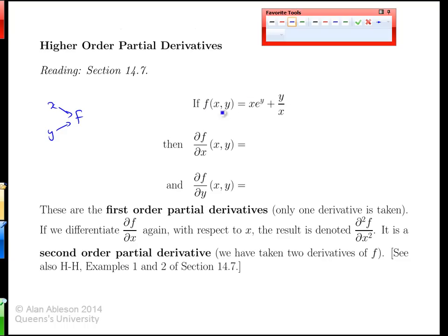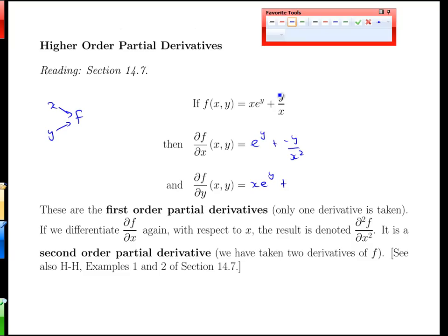Let's consider a simple example: f equals x·e^y plus y over x. We know how to take the partial derivatives of that function. The x partial derivative gives e^y minus y over x squared, and the y partial derivative of e^y is e^y, while the y derivative of y over x is 1 over x.